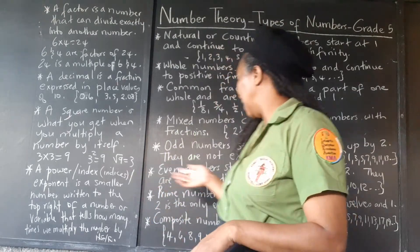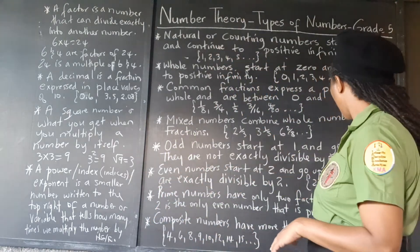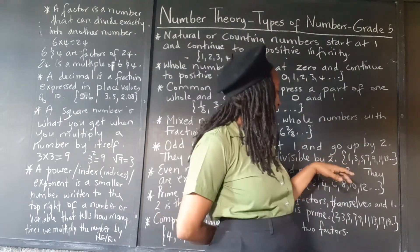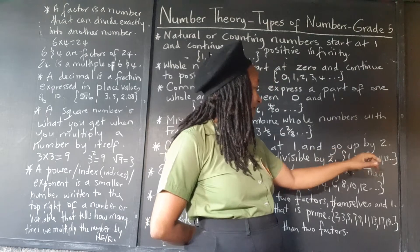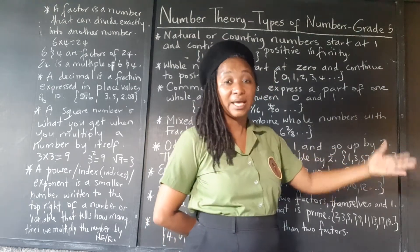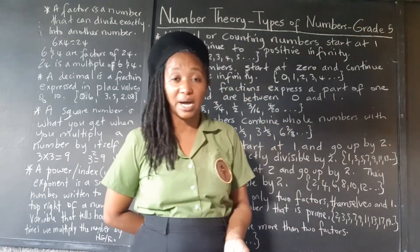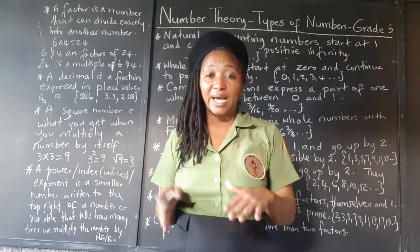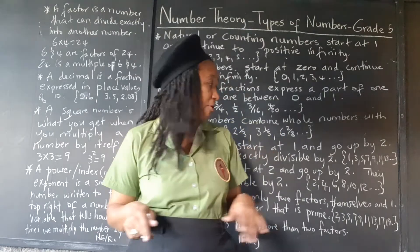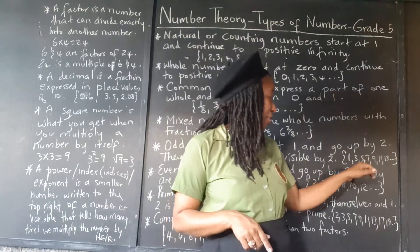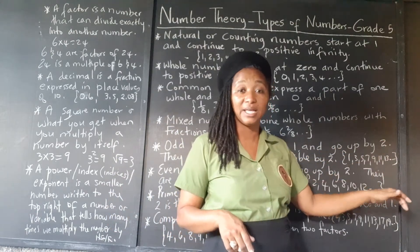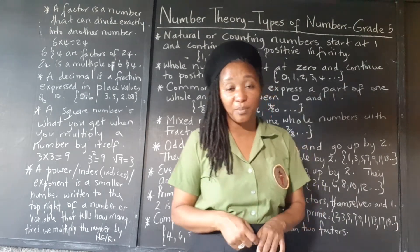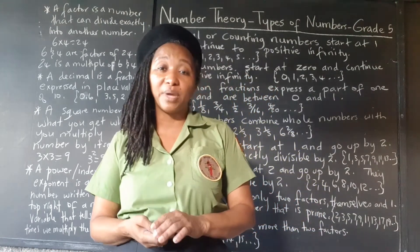Odd numbers typically will end with these digits. So if you see a number and it ends with one, three, five, seven, or nine, it's an odd number. It doesn't matter how many digits the number has or how long the number is — just look at the last digit. If it's a one, three, five, seven, or nine, it's an odd number. And if you divide that number by two, you will get a remainder of one.